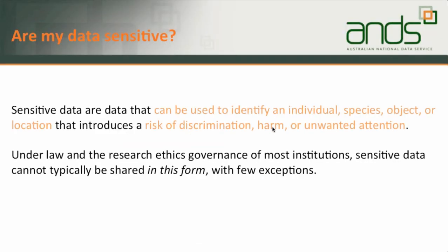The first step — and probably the reason many of you are here — is: is my data sensitive? This is the definition in the guide: sensitive data is data that can be used to identify an individual, species, object, or location that introduces a risk of discrimination, harm, or unwanted attention. Under law and research ethics governance of most institutions, sensitive data of this form cannot typically be shared in this form, with a few exceptions. Definitions can be quite disparate and are typically discipline- or institutionally-specific.